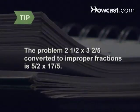For example, the mixed numbers in 2 and a half times 3 and 2 fifths convert to the improper fractions 5 halves and 17 fifths.